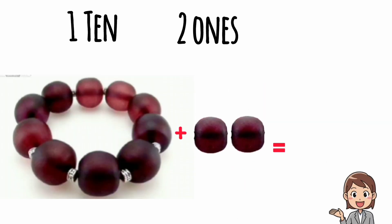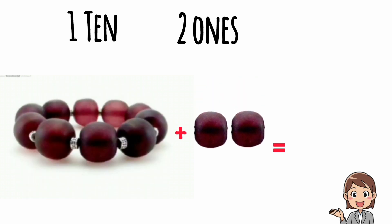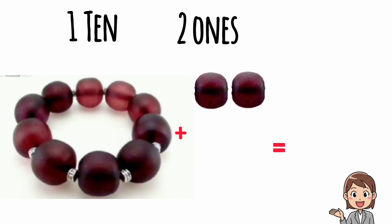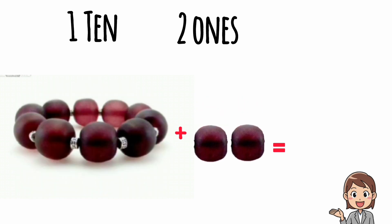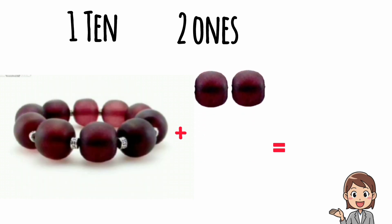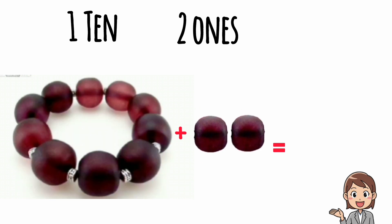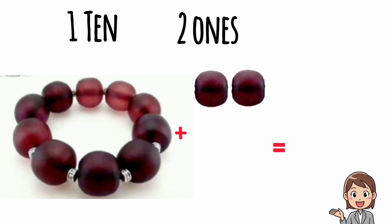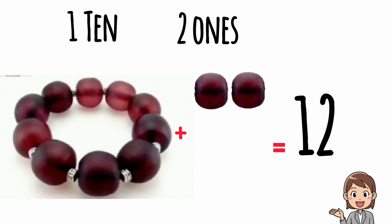Students, look at this picture. Here we have one bracelet and two beads. One bracelet means one ten and two beads means two ones. So one ten and two ones make twelve. Twelve.